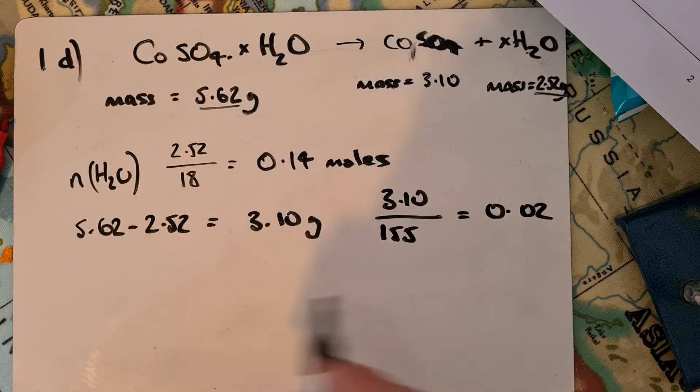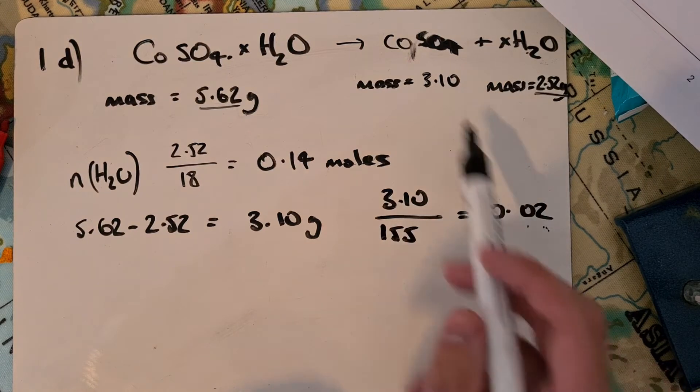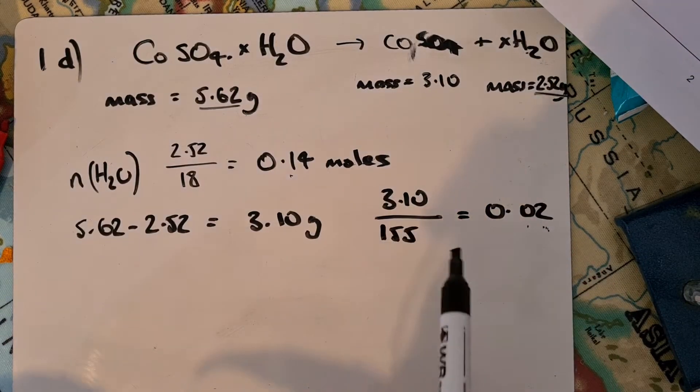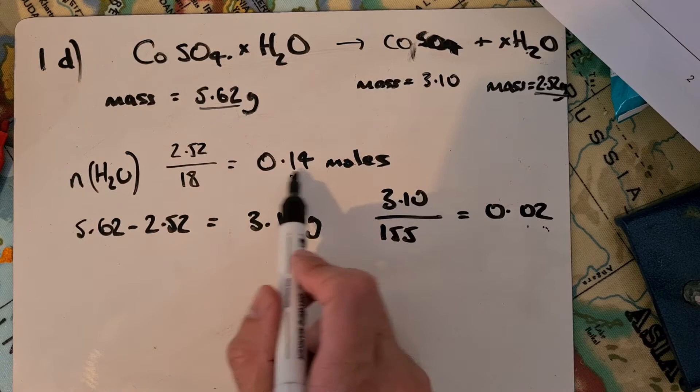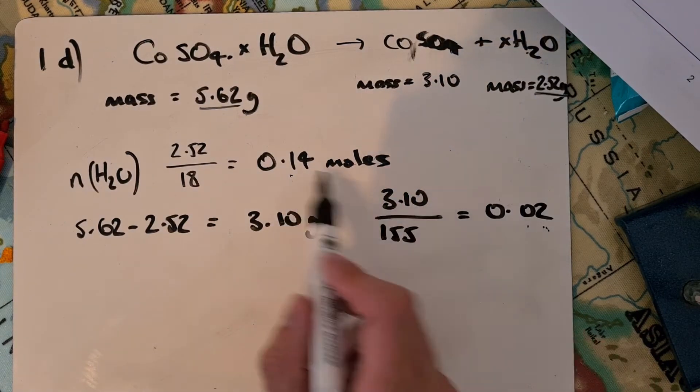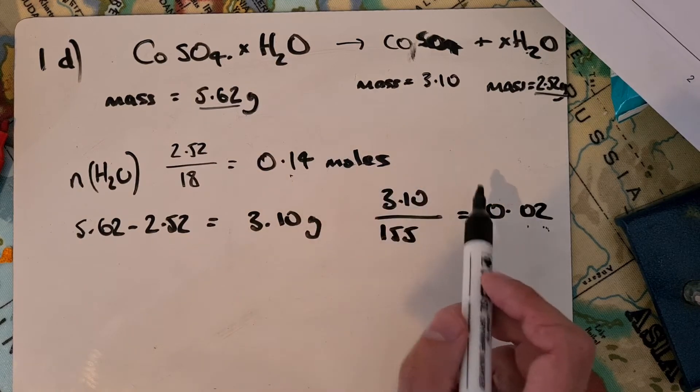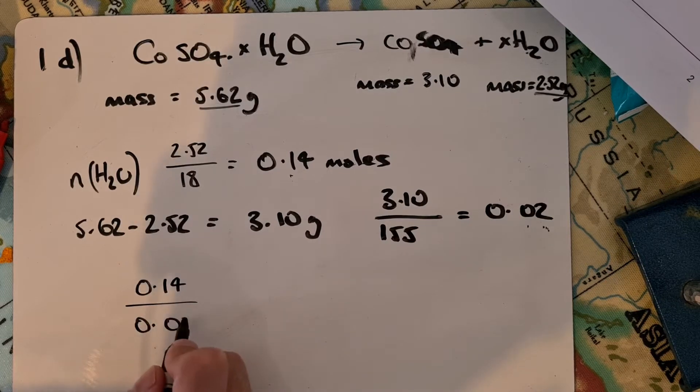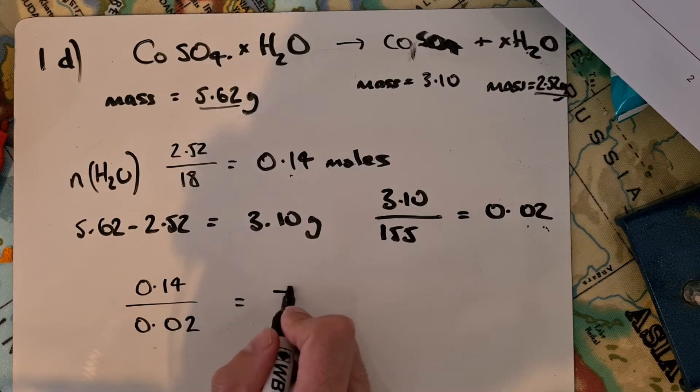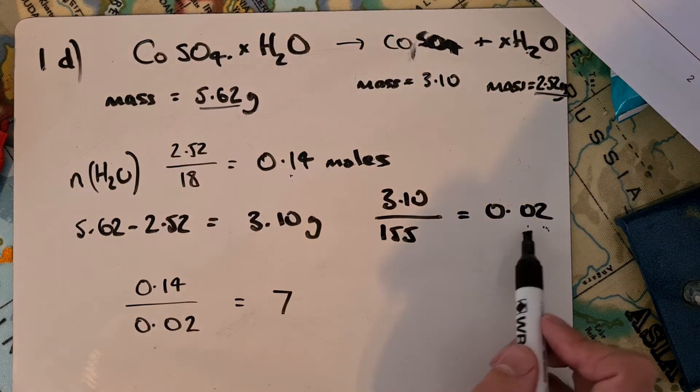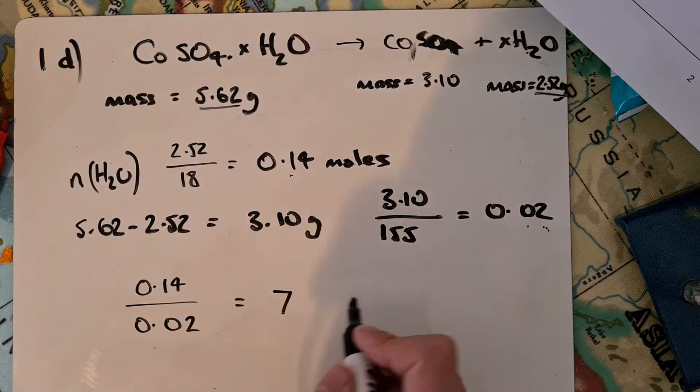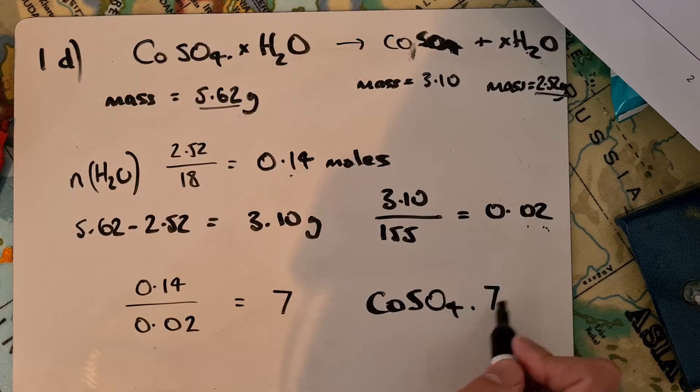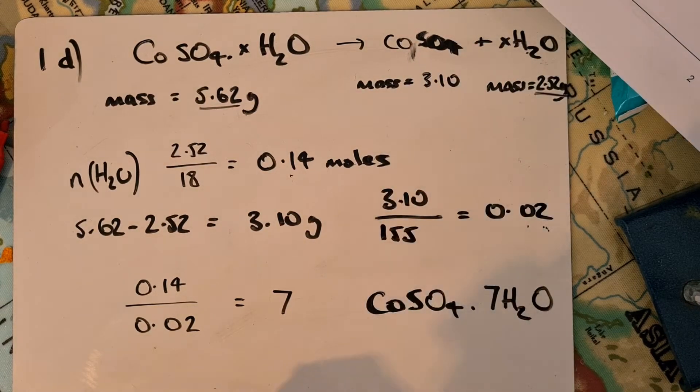This tells me if I have 0.02 moles of cobalt sulfate, I have 0.14 moles of H2O produced. I can see the ratio - if I have one of these, how many moles of water will be produced. I'll take 0.14 and divide by 0.02, which gives 7. So if I had one of these, there'd be 7 H2Os. So X equals 7, or cobalt sulfate 7H2O.